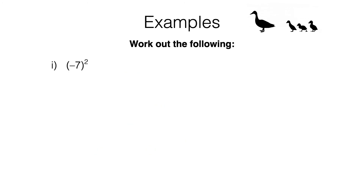Here's the last question: we need to work out negative 7 squared. This equals negative 7 multiplied by negative 7, and if you work that out you will get positive 49.